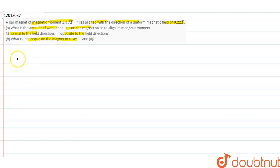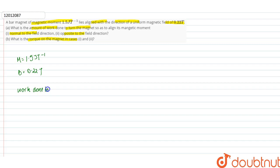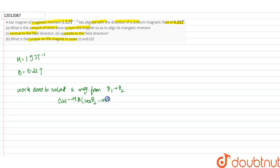We have the magnetic moment M = 1.5 joules per tesla, and the magnetic field B = 0.22 tesla. We state the general result: to rotate a magnet from angle θ₁ to θ₂, the work done is ΔW = −MB(cosθ₂ − cosθ₁).